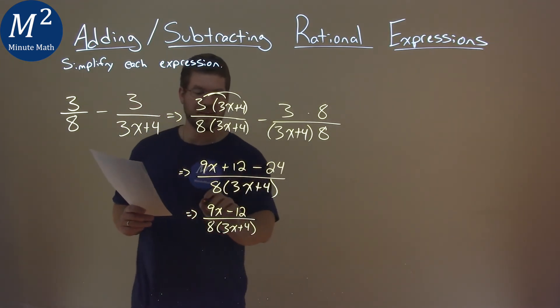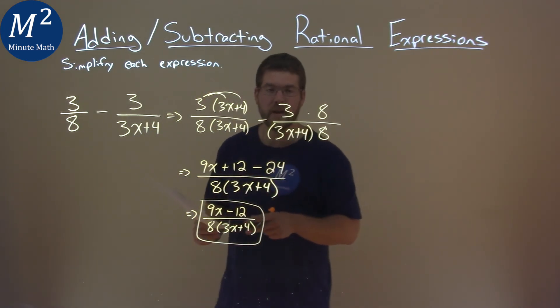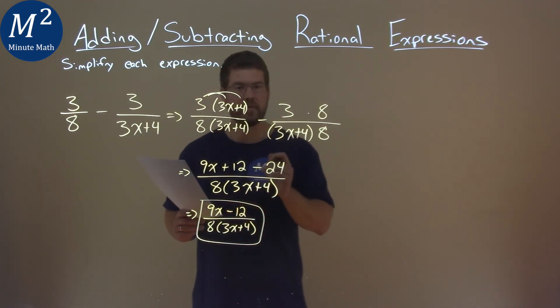And so this cannot simplify anymore, and so our final answer is 9x minus 12 over 8 times 3x plus 4.